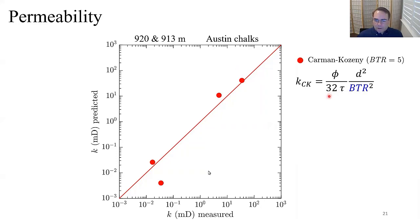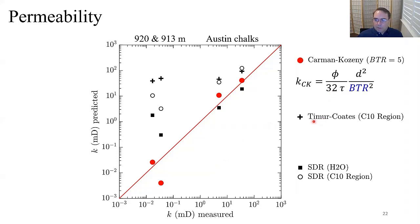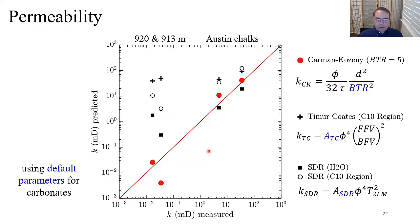Comparing to traditional methods: the Timur-Coates model (crosses) and the SDR method using fully water-saturated data (squares) and the C10 region (open symbols), both using default carbonate parameters, overestimate permeability by orders of magnitude. Our Carman-Kozeny approach represents a major improvement.